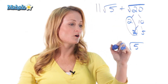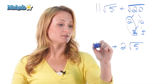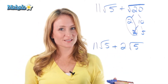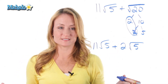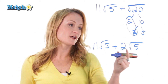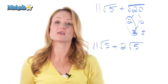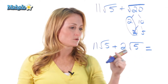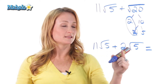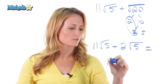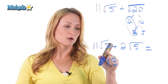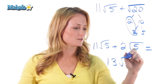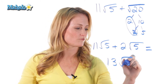Bring down our other eleven root five and now it looks like a problem that we can do. Very simple. The radicals have the exact same number in them so that means we can add them together. So add eleven plus two — thirteen. And we don't add the number inside the radical once it's the same. It stays.